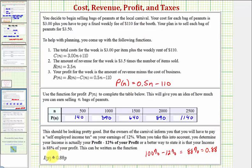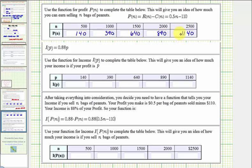This can be written as a function I of P, where I is the income and P is the profit. So I of P equals 0.88 times P. Again, the 0.88 came from taking 100% of your profit, subtracting 12% of your profit, which leaves you with 88% of your profit for your income, where 88% as a decimal is 0.88.